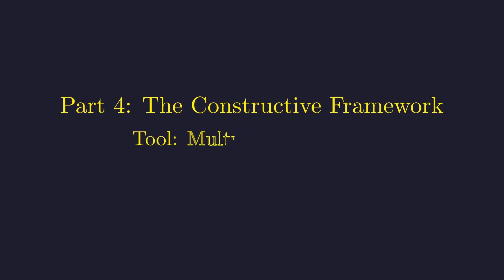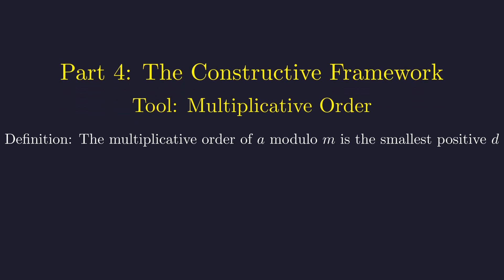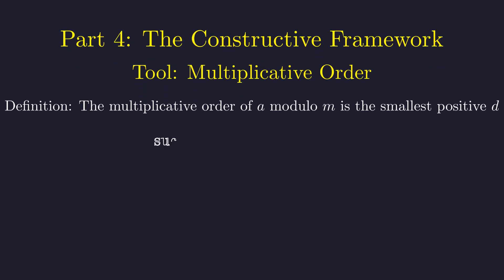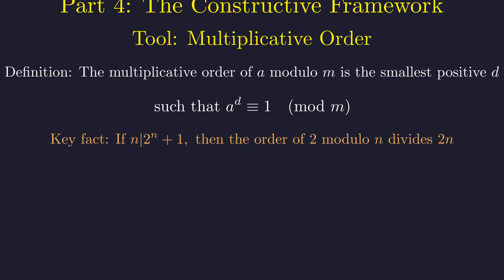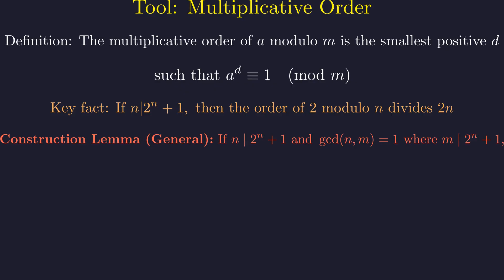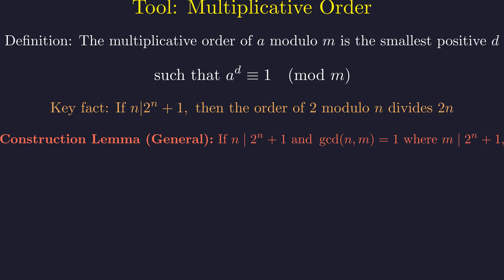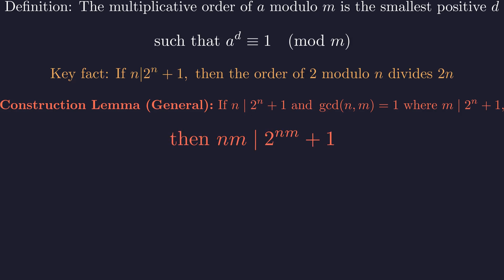The existence of this counterexample reveals something profound. The problem is not about elimination, but construction. We can build infinite families of solutions. To make our construction precise, we need the concept of multiplicative order. The multiplicative order of a modulo m is the smallest positive integer d, such that a to the d is congruent to 1 modulo m. Key fact, if n divides 2 to the n plus 1, then the multiplicative order of 2 modulo n must divide 2 times n. Here's the most general construction lemma. If n divides 2 to the n plus 1, and m is any factor of 2 to the n plus 1 that is coprime to n, then n times m also divides 2 to the power n m plus 1.